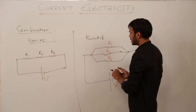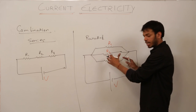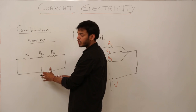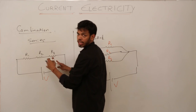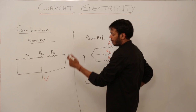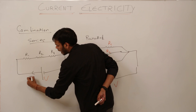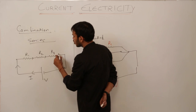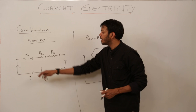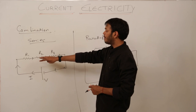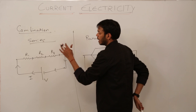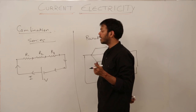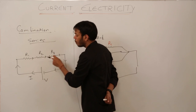Each resistor is separately or individually connected with the voltage source. But in series, whatever potential difference is given to the whole circuit is divided across each resistor separately. When current flows in this circuit, current has got only one path or one way to flow — that means current will be a single value in the whole circuit. But there will be individual potential drop across each component.